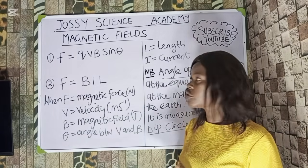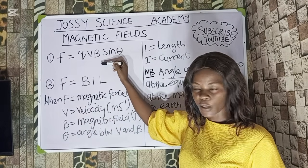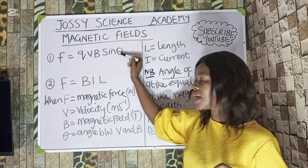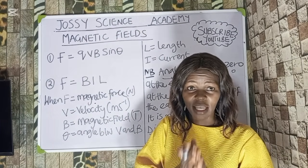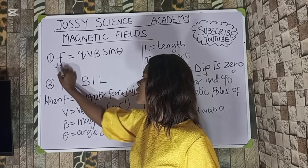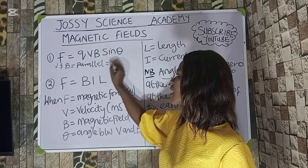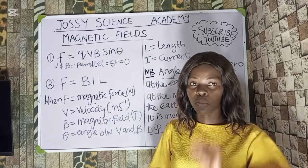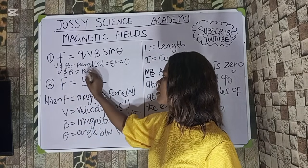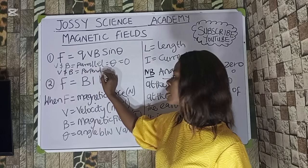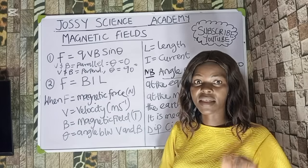Now the formulas for magnetic field. The first is the magnetic force: F equals qvB·sinθ, where F is the magnetic force, q is the charge, v is the velocity, B is the magnetic field measured in Tesla, and θ is the angle between v and B. If v and B are parallel, θ equals zero, so the magnetic force equals zero. If v and B are perpendicular, θ equals 90 degrees and maximum magnetic force is obtained.